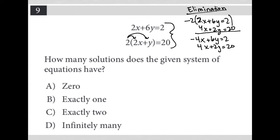Actually, I made a mistake here. Distributing -2 across everything gives me -4x - 12y = -4. Let me fix this up.